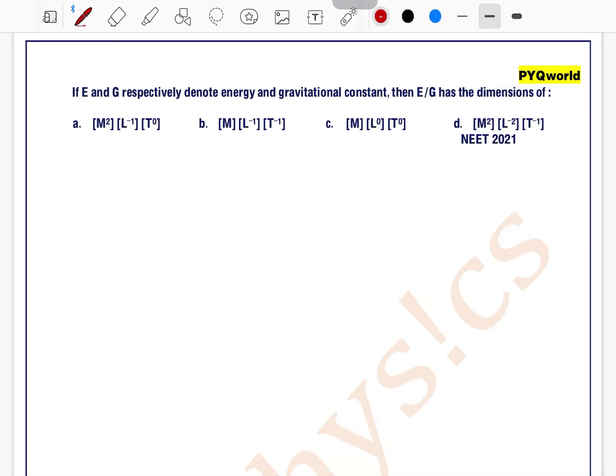If E and G respectively denote energy and gravitational constant, then E/G has the dimensions of... E denotes energy.